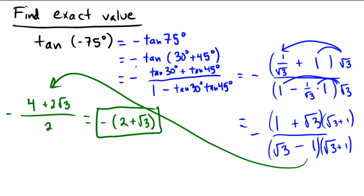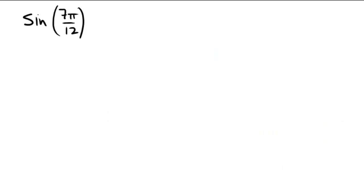Okay, that had a lot of work in it, but still it came out to be not too bad. It has a radical, but not the most terrible number I've ever seen. So why don't you try one on your own here? Try the sine of 7 pi over 12.